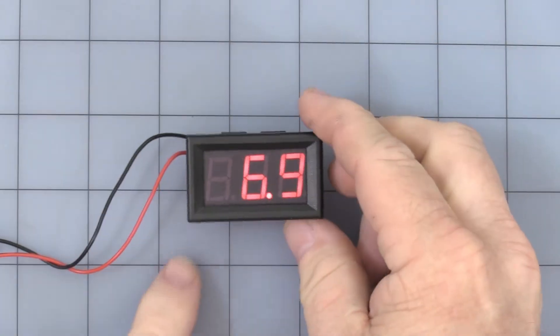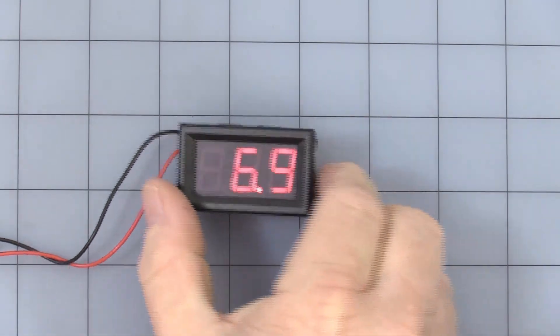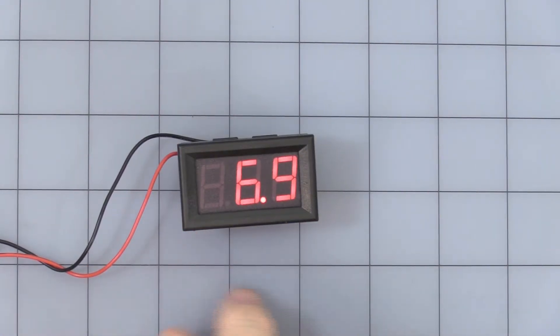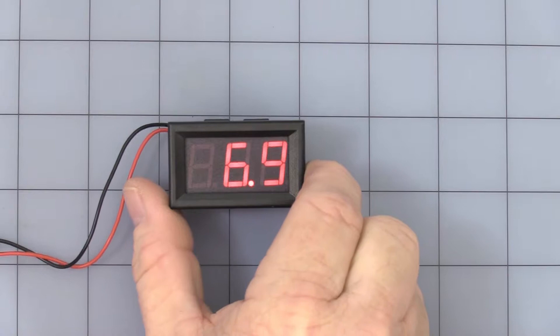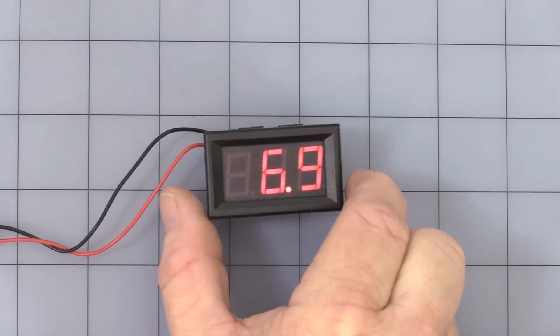As you can see the size, these are about 2-inch squares. Actually, I'm sorry, 1-inch squares. And overall it's right about 2 inches. This gives you an idea about the size of it.